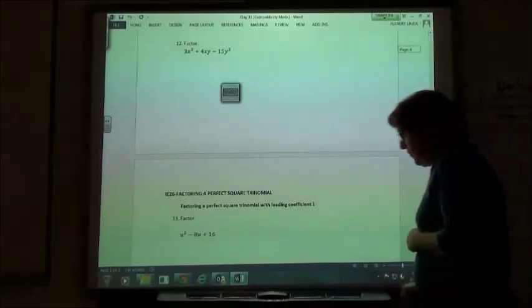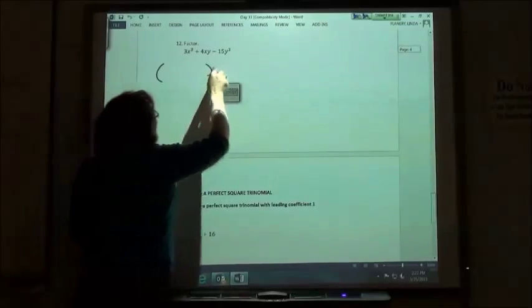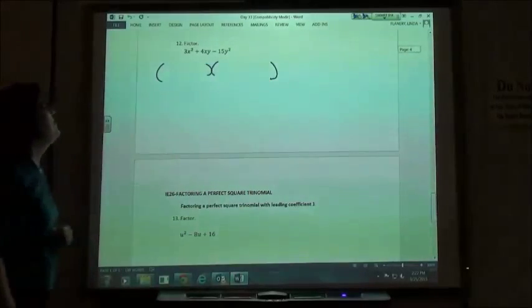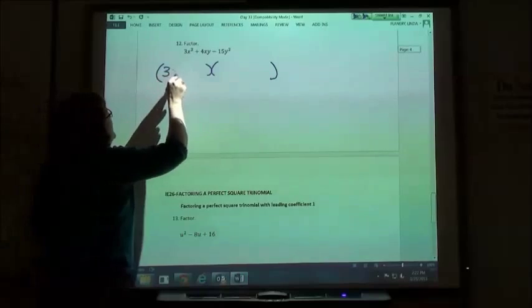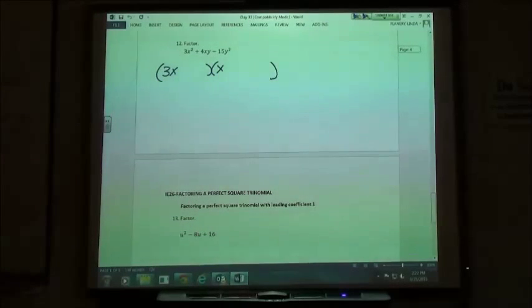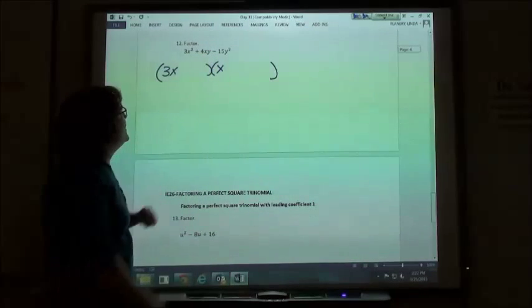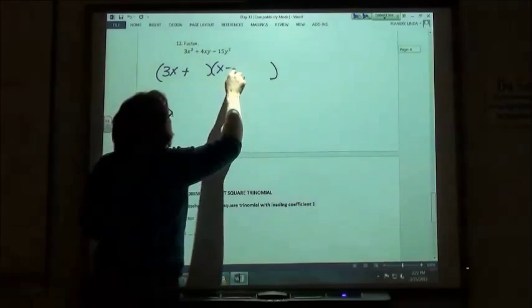Number 12, still factoring. Going to put my two sets of parentheses. Factors of 3x squared. 3x times x or x times 3x, whichever order you prefer. My end is negative. If my end is negative, I know I have 1 plus and 1 minus.